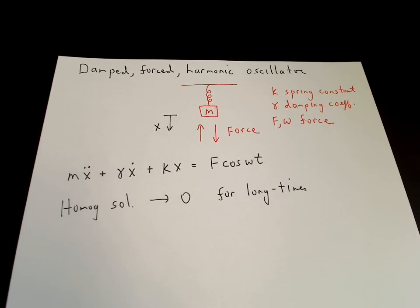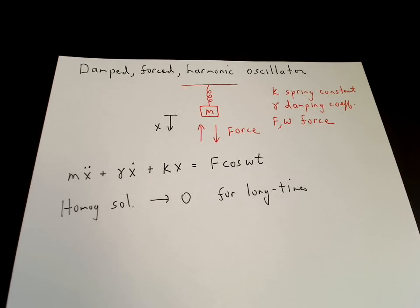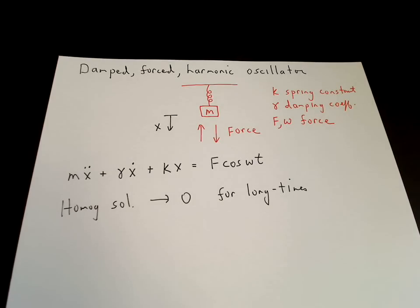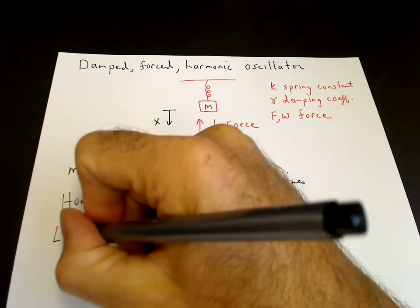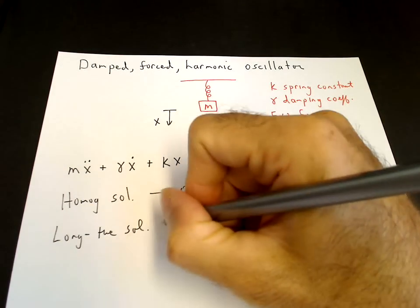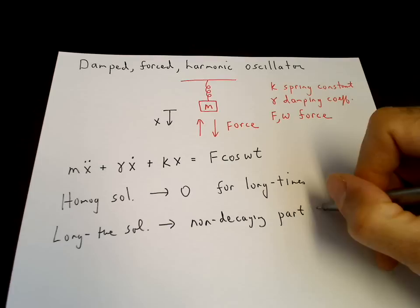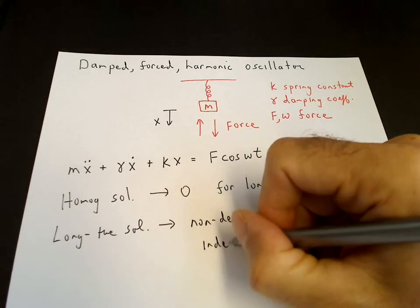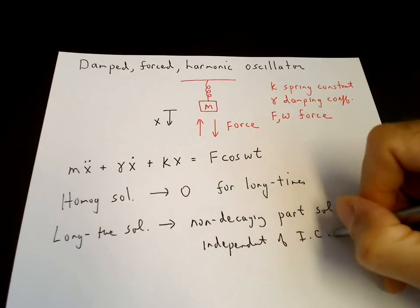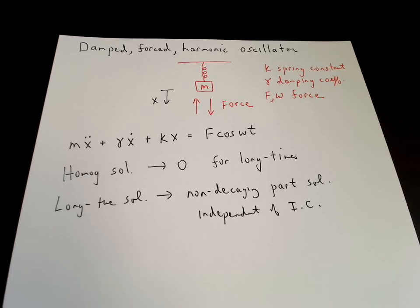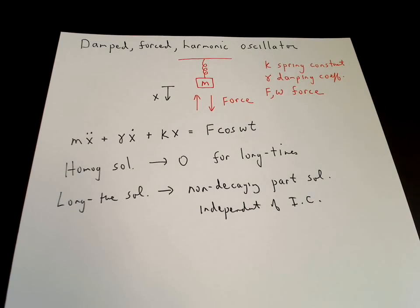What that means is that the general solution of the equation will turn out to be the non-decaying particular solution, and it will be independent of the initial conditions — because the free constants in the general solution multiply the homogeneous solution and are used to satisfy the initial conditions. So the long-time solution goes to the non-decaying particular solution, and it's independent of the initial conditions. That's an important feature of a damped oscillator.